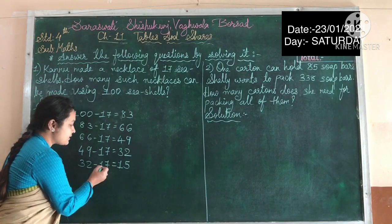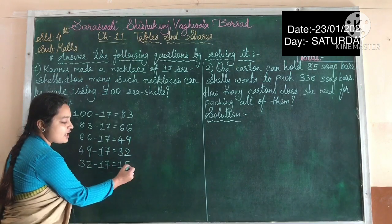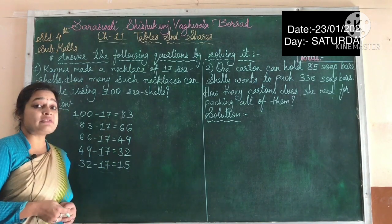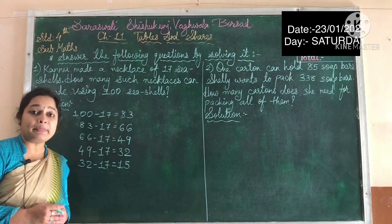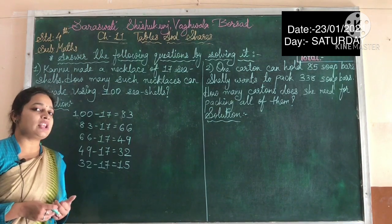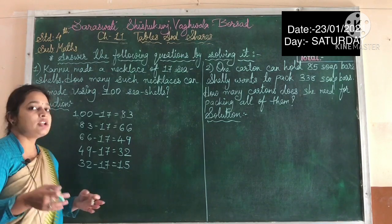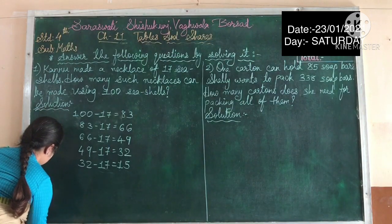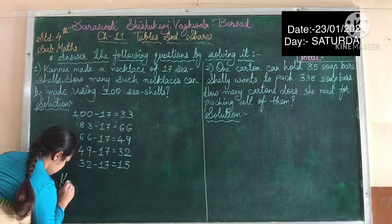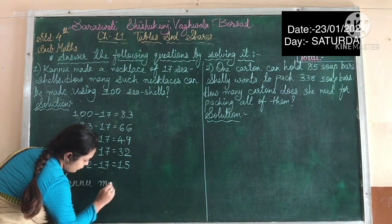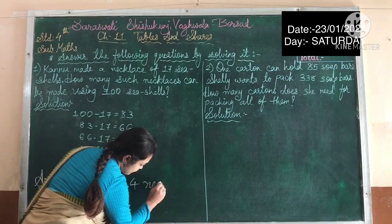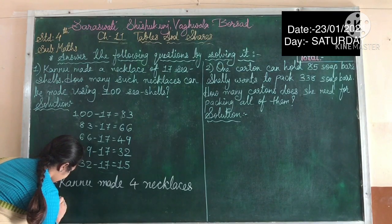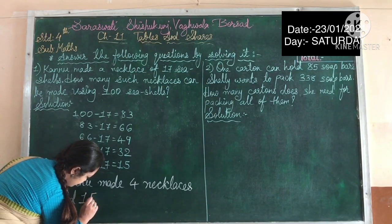Now if you count how many subtractions are there — we do not count this 15 — one, two, three, four. From this we can say that four necklaces Kanu had made, and 15 shells were left over as it is. So this is our answer in sentence form: four necklaces were made and 15 shells were left over.